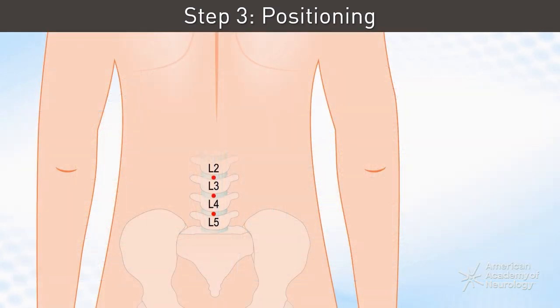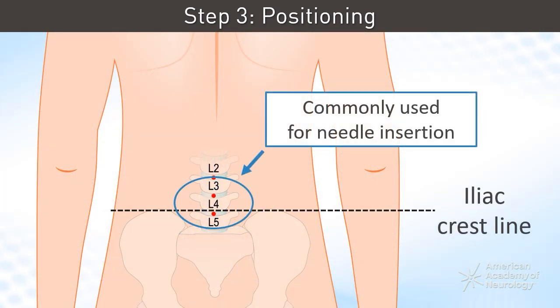Then comes site identification. The L3 to L4 or L4 to L5 intervertebral space is commonly used for needle insertion. This is located by identifying the highest points of the iliac crests, which roughly correspond to the L4 spinal level, and then moving one interspace above or below.